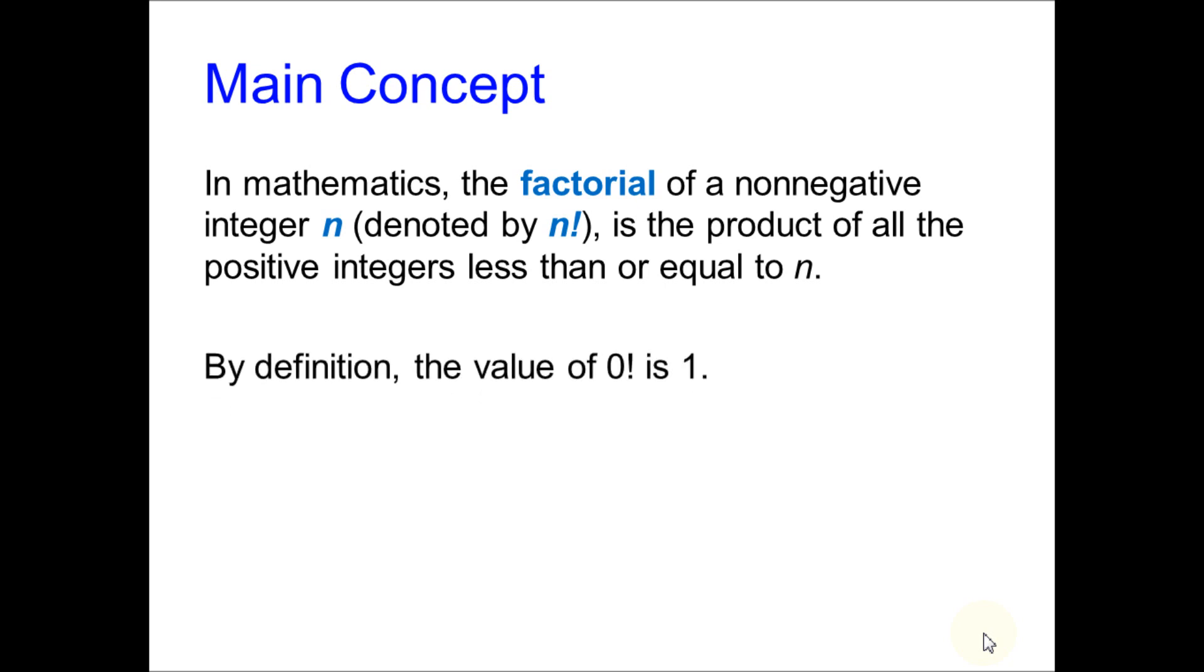By definition, the value of 0 factorial is 1. For example, 5 factorial means 1 times 2 times 3 times 4 times 5.